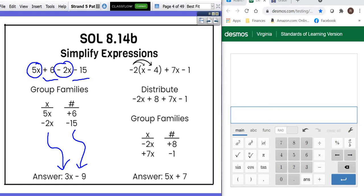Then bring down the rest, plus 7x minus 1. Then you do exactly what we did on the other one. You're going to find your x's and put them together, which gives you 5x. Then you're going to find your number families and put them together, which gives you 7. And that's how you simplify expressions.